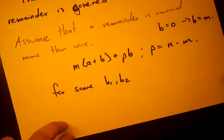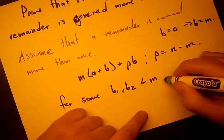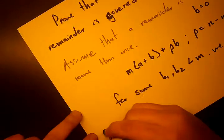We're going to assume that it is covered more than once. That means that for some B1, B2 is less than M. They're both less than M. We have the same remainder.